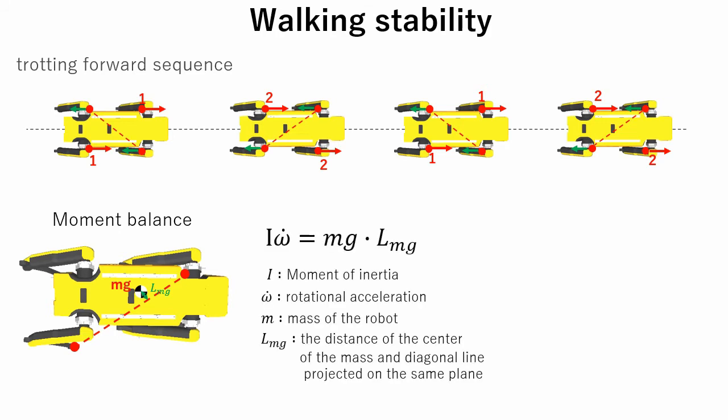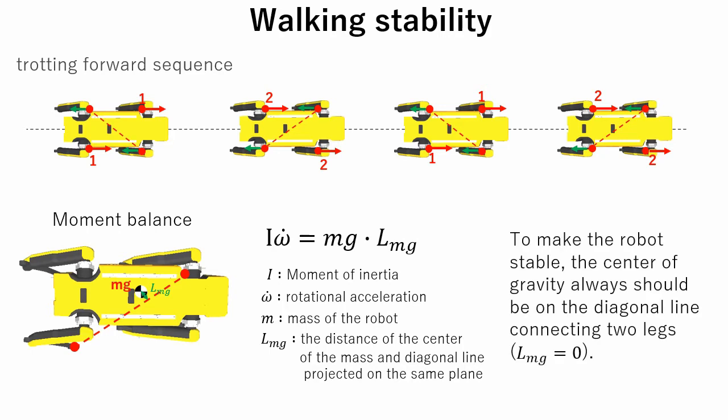Mathematically this can be explained as a rotation equation around diagonal line. To make the robot stable, rotation acceleration omega dot should be zero, which means that the center of gravity always should be on the diagonal line connecting two legs.